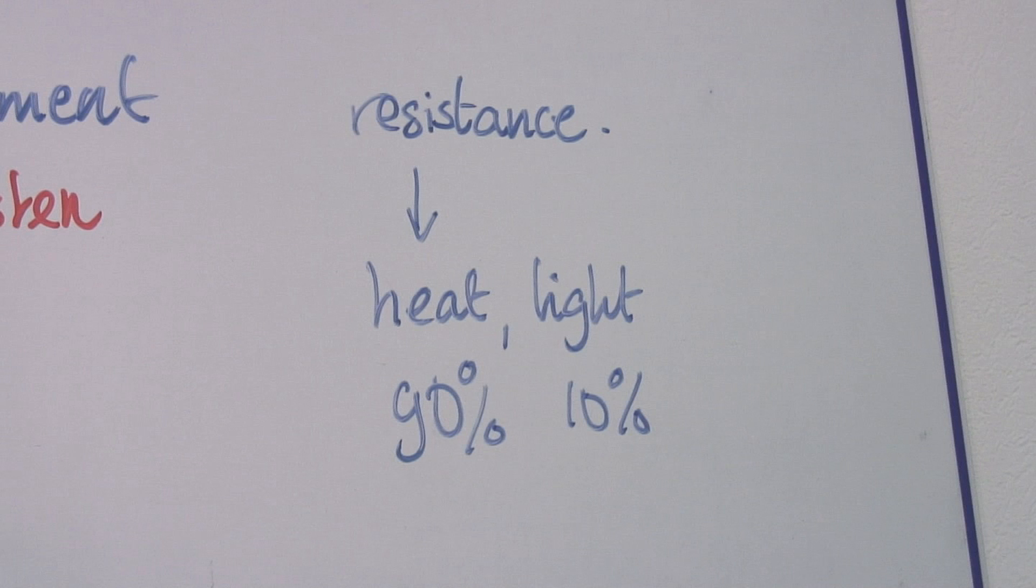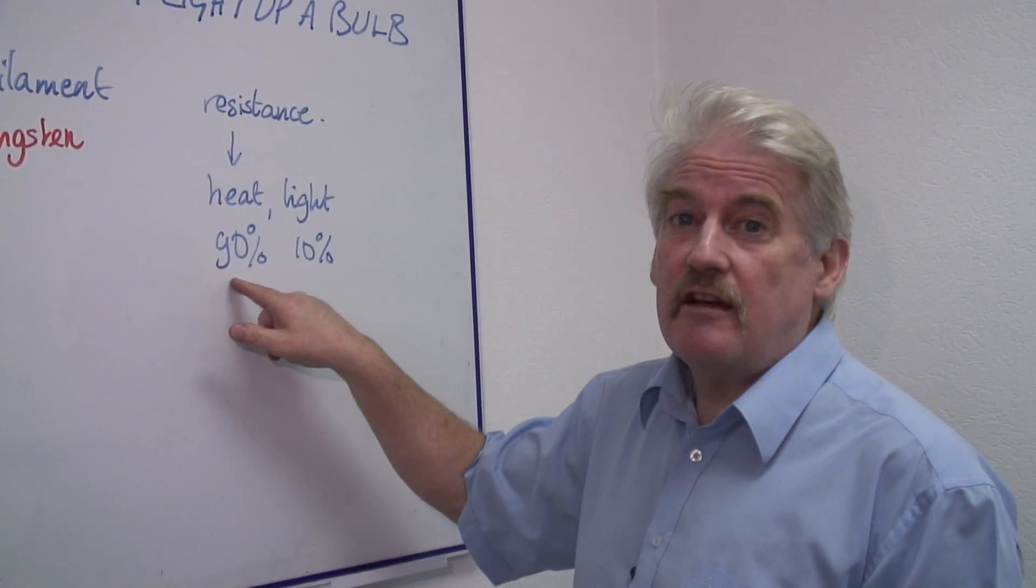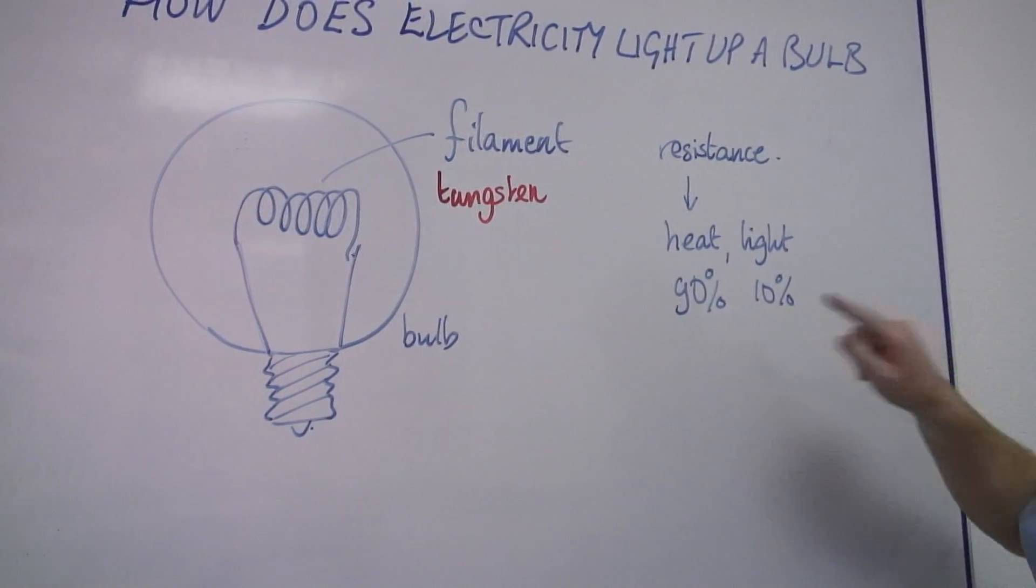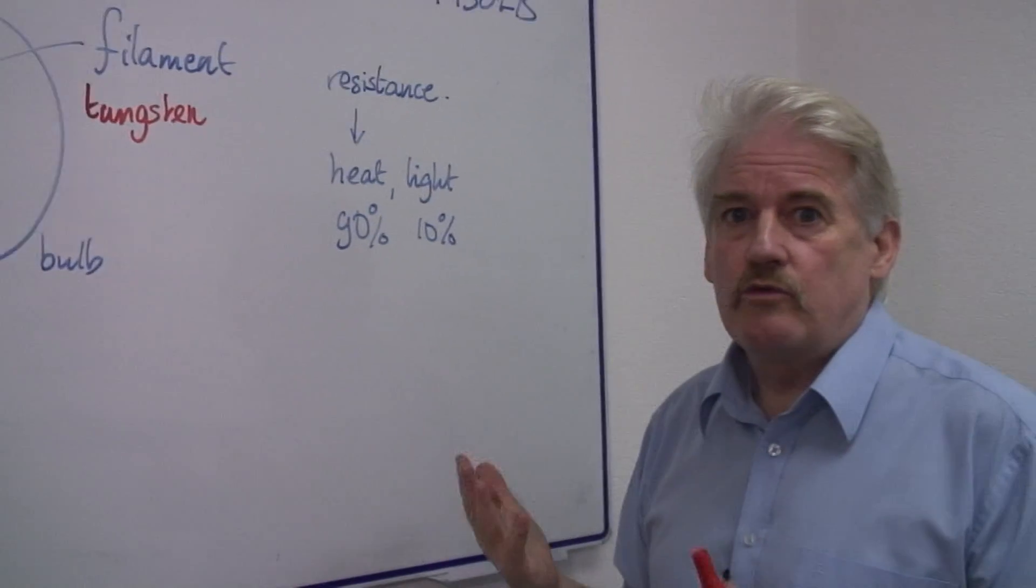In fact of the energy going into this filament lamp 90% is going to turn out as heat. This gets very hot. 10% turns up as light and that 10% is what lights your room.